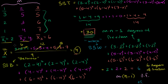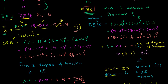In the last couple of videos, we figured out the total variation in these nine data points, and we got that to be 30. That's our total sum of squares. We asked ourselves how much of that variation is due to variation within each of these groups versus variation between the groups. For the variation within the groups, we had our sum of squares within, and we got 6. The balance of this 30 came from variation between the groups, and we calculated it to be 24.